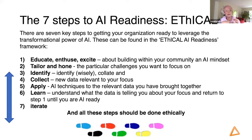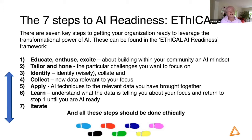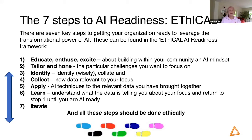We take you through a seven-step process to what we call AI readiness. We've already done steps one, two, and three. We've looked at how you need to bring your whole community on board so they understand why you might change the way things work to leverage data and AI. We've looked at how to pick specific challenges to focus on and how to identify data you already have — sometimes people have data they don't realize they have, including data about the physical environment as well as assessment results. Today it's all about collecting new data.